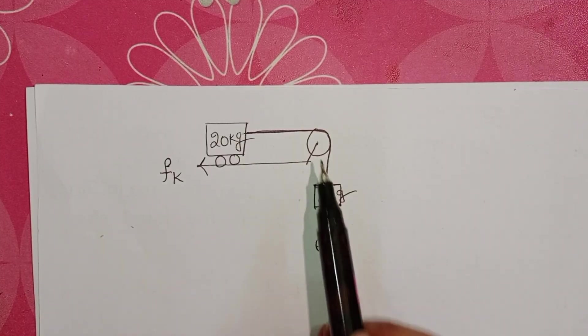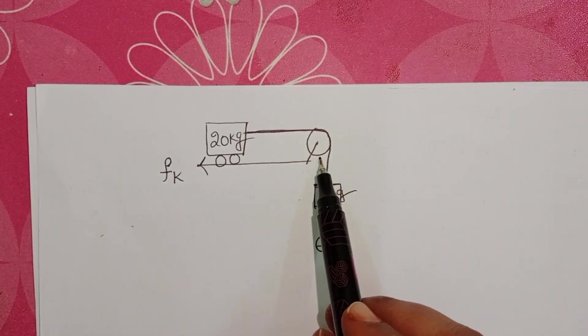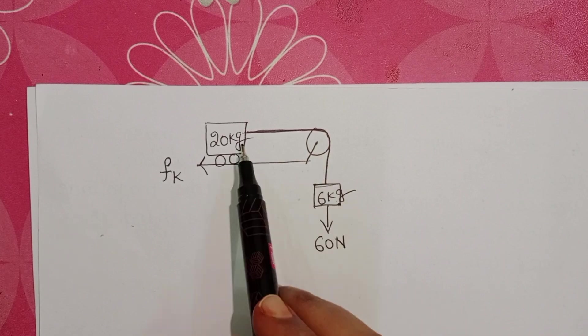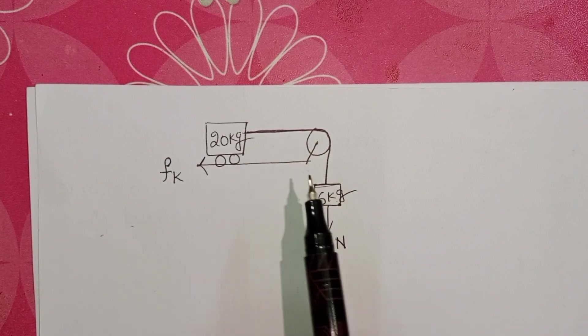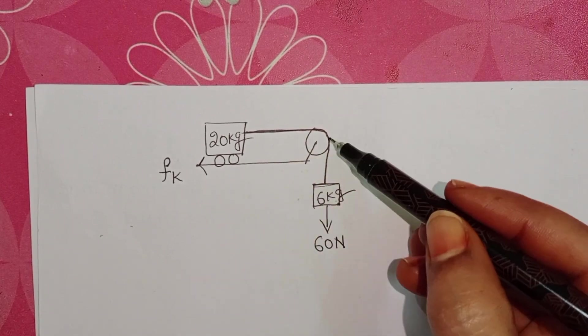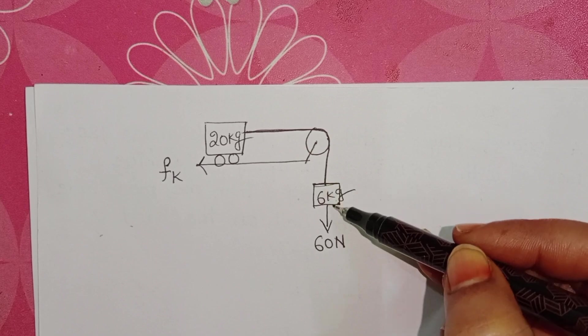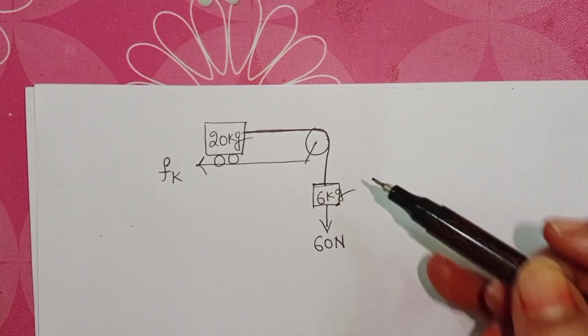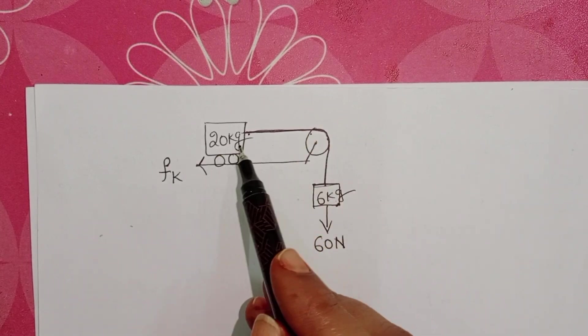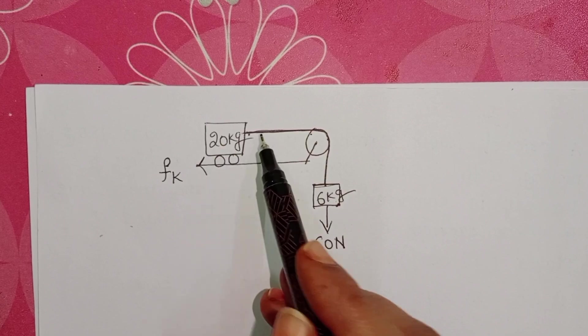This is the given diagram. This pulley is massless and frictionless. The given string is also massless. One end of the string is connected with a 6 kg block, and another end of the string is connected to a 20 kg trolley.